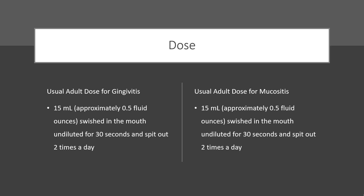Usual adult dose for periodontitis: 2.5 milligrams — 1 periodontal chip — inserted into a periodontal pocket with probing pocket depth (PD) of 5 milliliters or more, every 3 months.